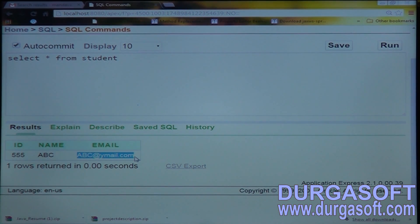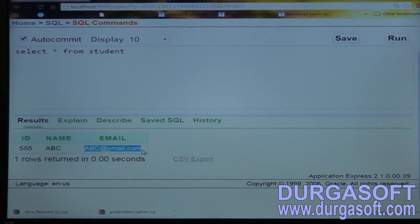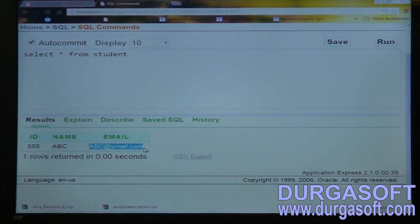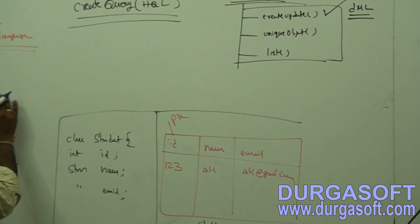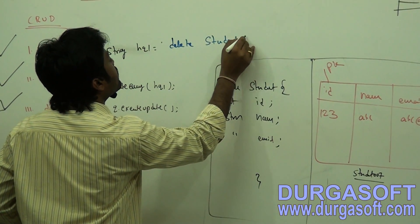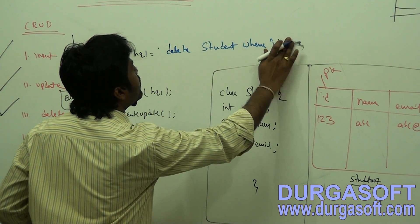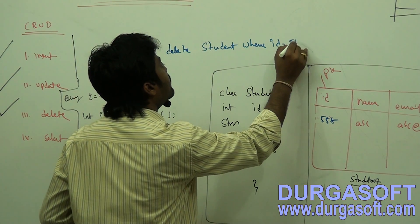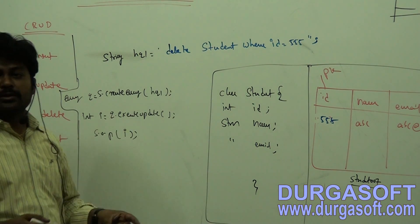In this way, single columns you can also update, but the limitation with the update method and merge method is no primary key update and not possible to update a single column. But using HQL you can do this. Here, if you want to delete, same type of queries we need to write. For deleting query also we need to use execute update only.